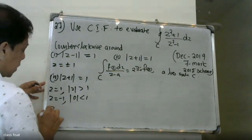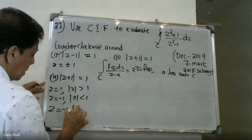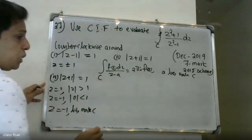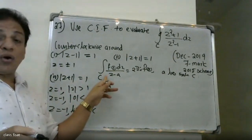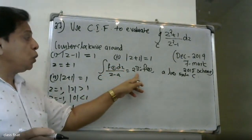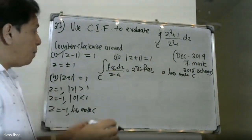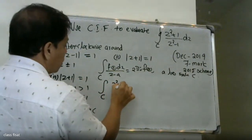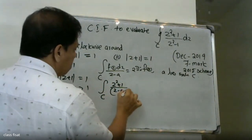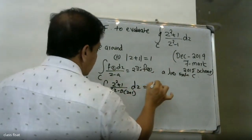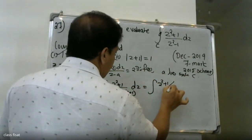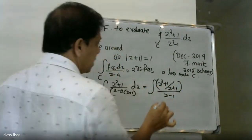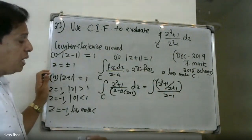For this region, z = -1 lies inside C. Therefore we apply Cauchy's integral formula: ∮ f(z) dz = 2πi · f(a), where a lies inside C. We write f(z) = (z² + 1) / (z - 1), with the factor (z + 1) in the denominator isolated.